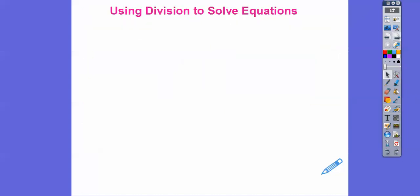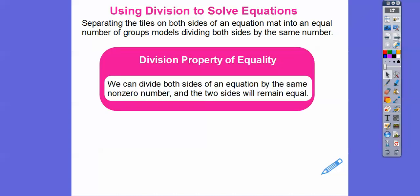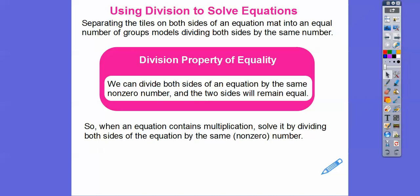Using division to solve equations: separating tiles on both sides of an equation into an equal number of groups models dividing both sides by the same number. We divided both sides by three. The Division Property of Equality says we can divide both sides of an equation by the same non-zero number and the two sides will stay equal. When an equation contains multiplication, we solve it by dividing both sides by the same number.